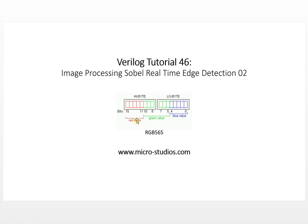This is two bytes — a high byte of eight bits and a lower byte of eight bits. R is five bits: one, two, three, four, five. Green is six bits: one, two, three, four, five, six. And blue is also five bits: one, two, three, four, five. This is the RGB 565 format for RGB output.